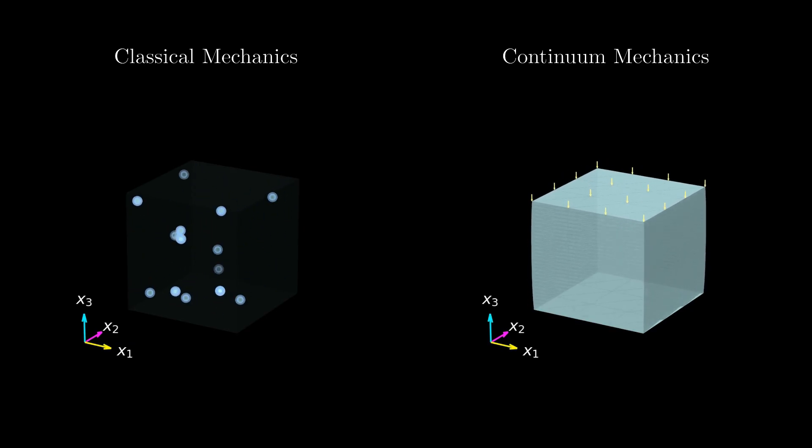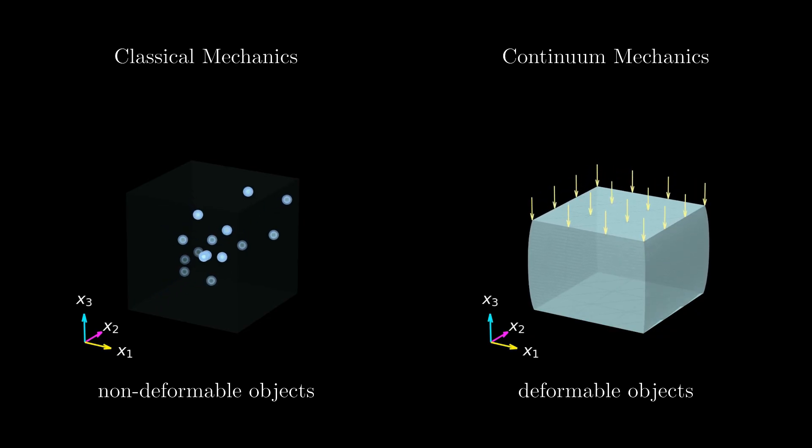So does this mean that classical mechanics is the study of non-deformable objects and Continuum Mechanics is the study of deformable objects? Well, yes, you could say that, but there is a little bit more to it.